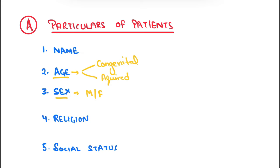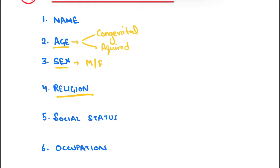Now coming to religion — why is religion important in history taking? For example, carcinoma of the penis is rarely seen in Muslims and Jews, because circumcision is compulsory in infancy in these religions. So carcinoma penis is rarely seen in Muslims and Jews.